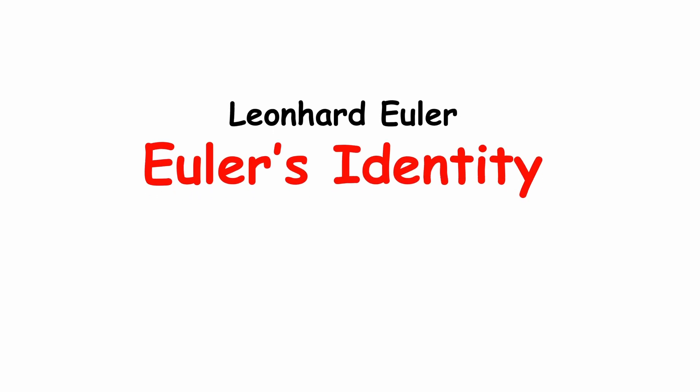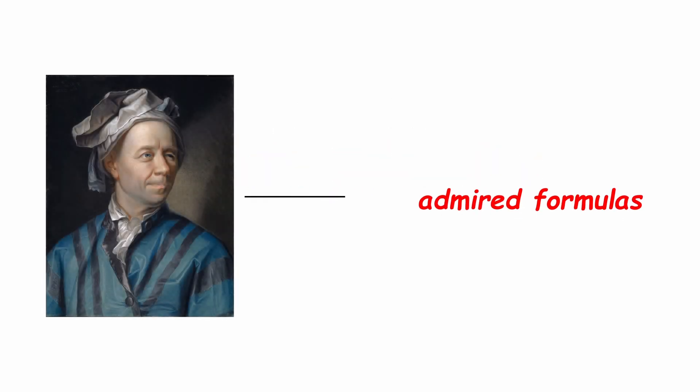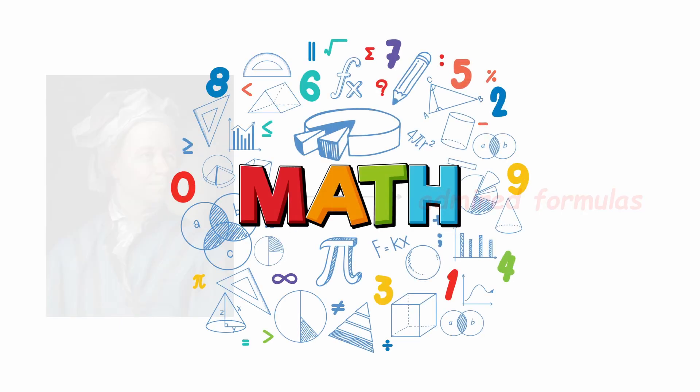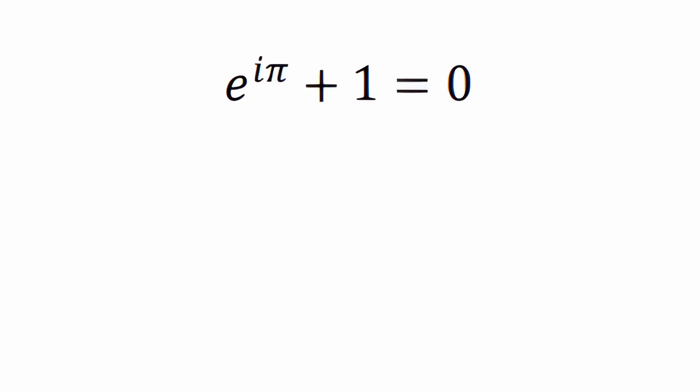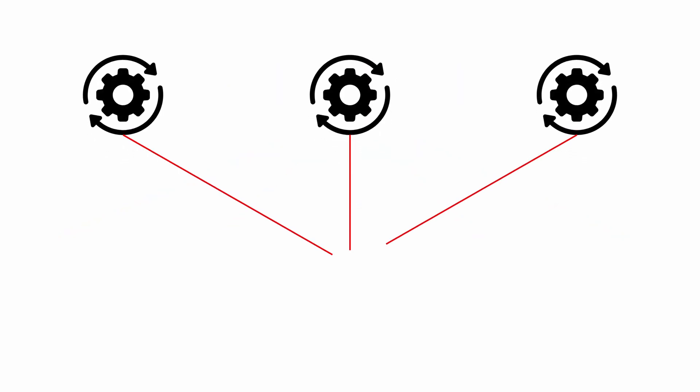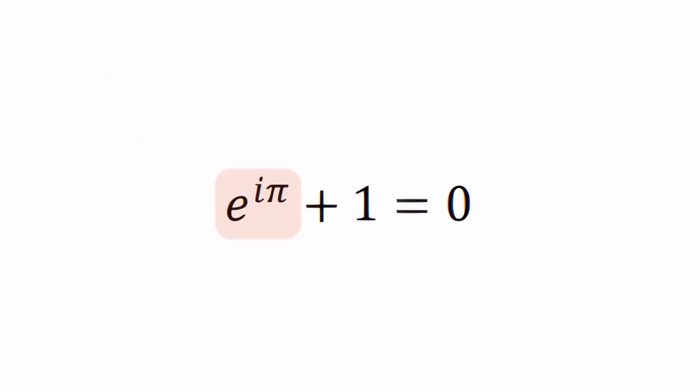Leonard Euler is responsible for one of the most admired formulas in the history of mathematics – Euler's Identity. This iconic equation connects five of the most fundamental numbers in mathematics with three basic operations in a single expression – e to the i pi plus 1 equals 0.